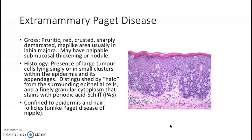Paget disease also exists in the breast, especially at the nipple. Extramammary Paget disease not only occurs in the vulva and vagina area, but also in the axilla.